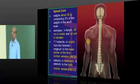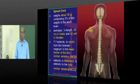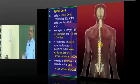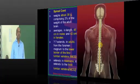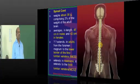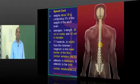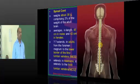Good evening to everyone and welcome to today's session. Today we shall have a review of three main topics in neuroanatomy, which include the spinal cord, the various tracts of the spinal cord, and the lesions of the spinal cord as the main focus.